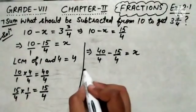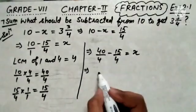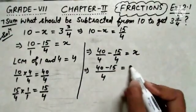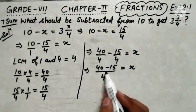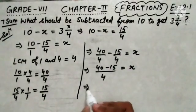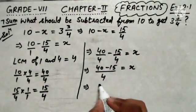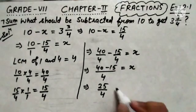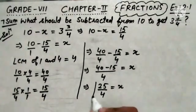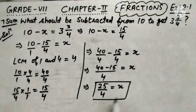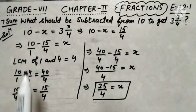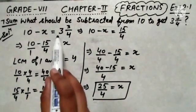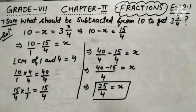These two terms are like terms having the same denominator, so we directly subtract them: 40 minus 15 equals 25, giving x equals 25 upon 4. The required answer is 25 upon 4. So from 10 we have to subtract 25 upon 4 to get the value 3 and 3 upon 4.